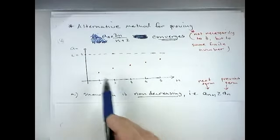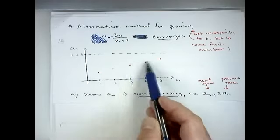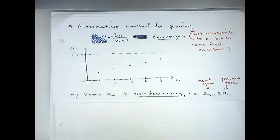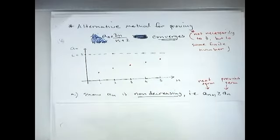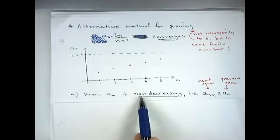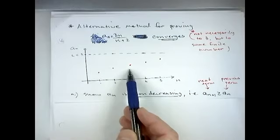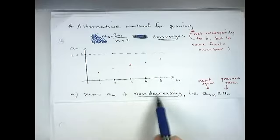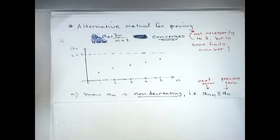Looking at some sequence values, we can tell each term is getting bigger and closer to 3 as we plug in successive values of n. There are two things we need to show about this sequence to prove convergence. The first is that a_n is non-decreasing — meaning the next term can't get any smaller, though it could stay the same. To show this, we need to show that a_{n+1} is greater than or equal to a_n.